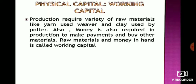The second type is working capital. Production requires a variety of raw materials — like yarn used by a weaver and clay used by a potter. Money is also required in production to make payments and buy other materials. So money and raw materials are the working capital.